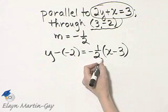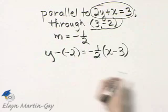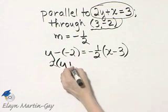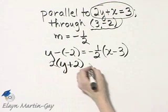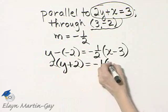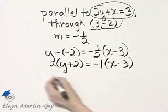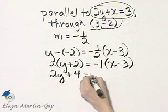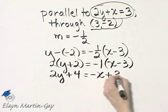So let's begin by simplifying. I will multiply both sides by 2. So I'll have 2 times y plus 2 is equal to, if I multiply this side by 2, the 2's cancel. And I have negative 1 times x minus 3. This is 2y plus 4 is equal to negative x plus 3.